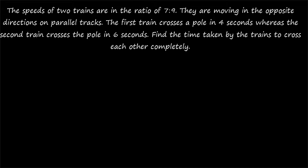Hi friends, welcome to today's class. Today's question is: the speeds of two trains are in the ratio 7 is to 9. They are moving in opposite directions on parallel tracks. The first train crosses a pole in 4 seconds, whereas the second train crosses the pole in 6 seconds. Find the time taken by the trains to cross each other completely.